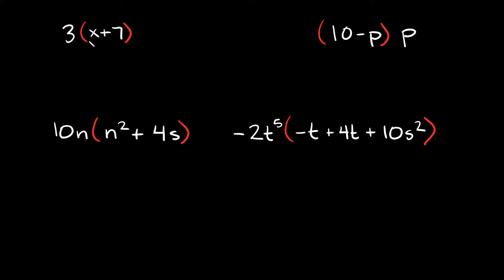Let's start with this first example. We have x plus seven in parentheses and then a three out here. You're just going to take this three and distribute it — multiply it by this first term and then by this second term. So three times x is equal to three x, and then three times seven is equal to 21. Since you're adding, you just bring that straight down. So your simplified answer is three x plus 21.